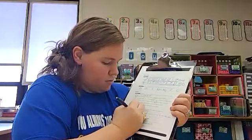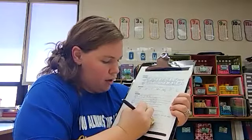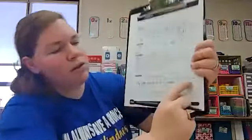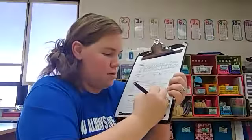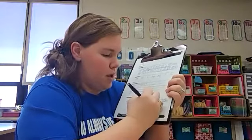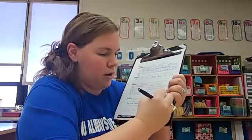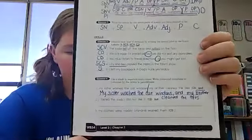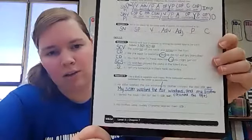So when we put this together we are going to write: my sister washed the car windows, then we're going to use what's in the parentheses, we're going to put comma and my brother cleaned the tires. We made a compound sentence: my sister washed the car windows and my brother cleaned the tires.